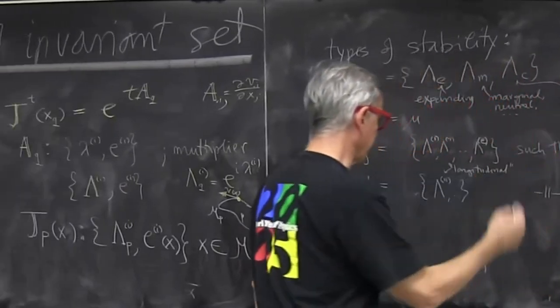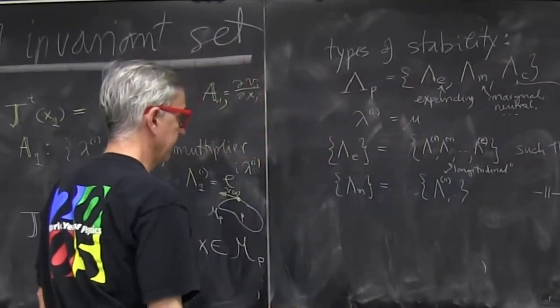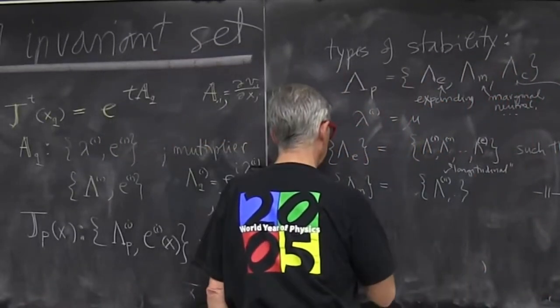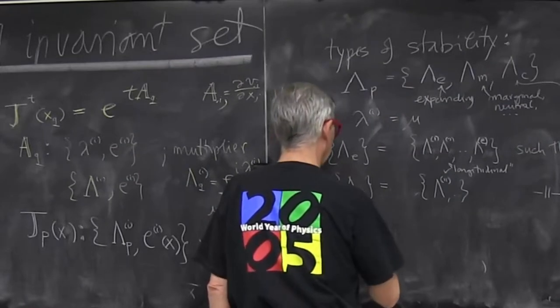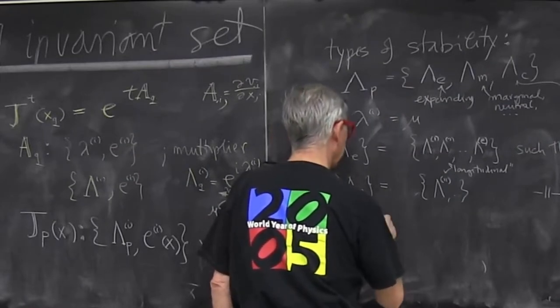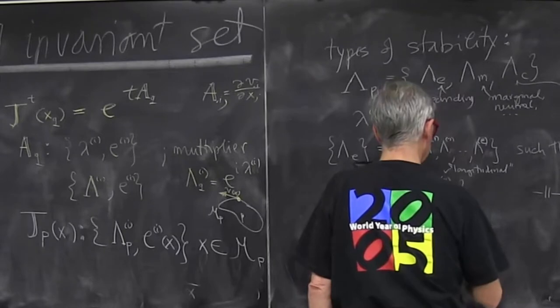If you perturb something, it just runs on a circle or an ellipse around your periodic point. And finally they could be contracting. There is a set of these.